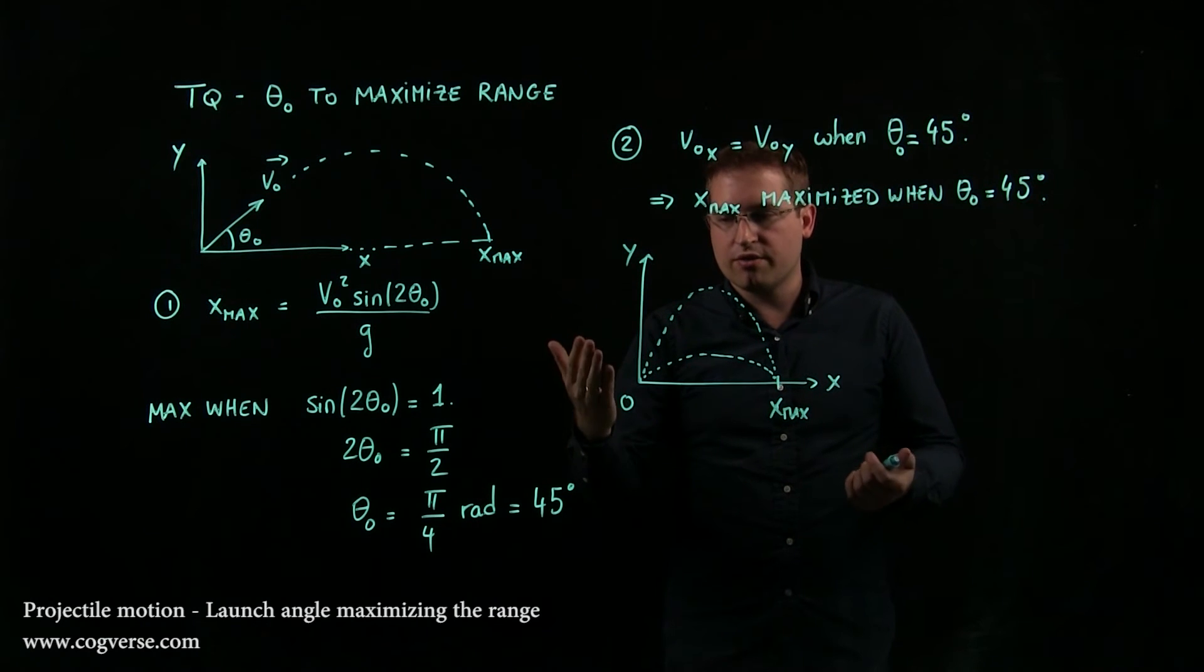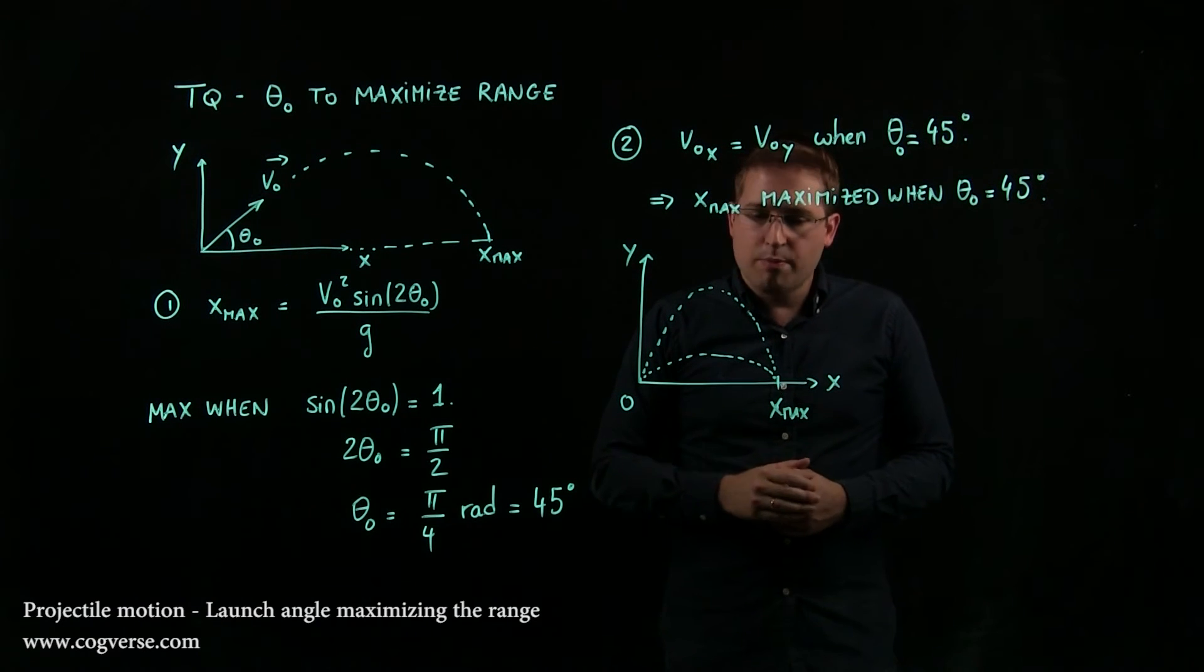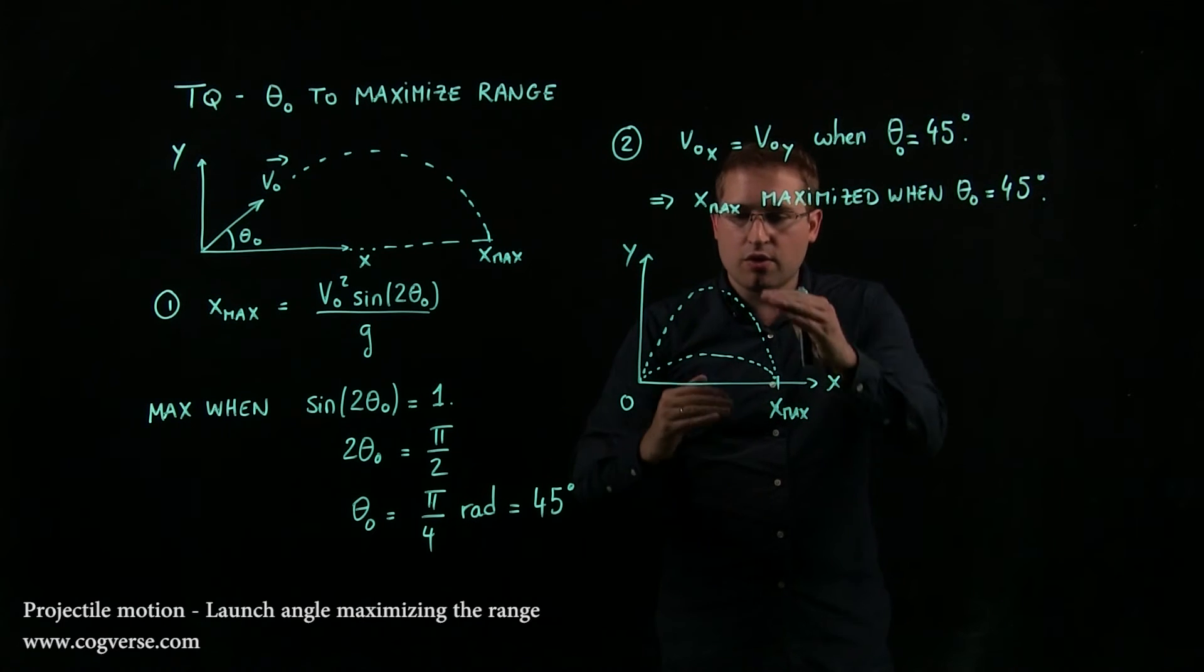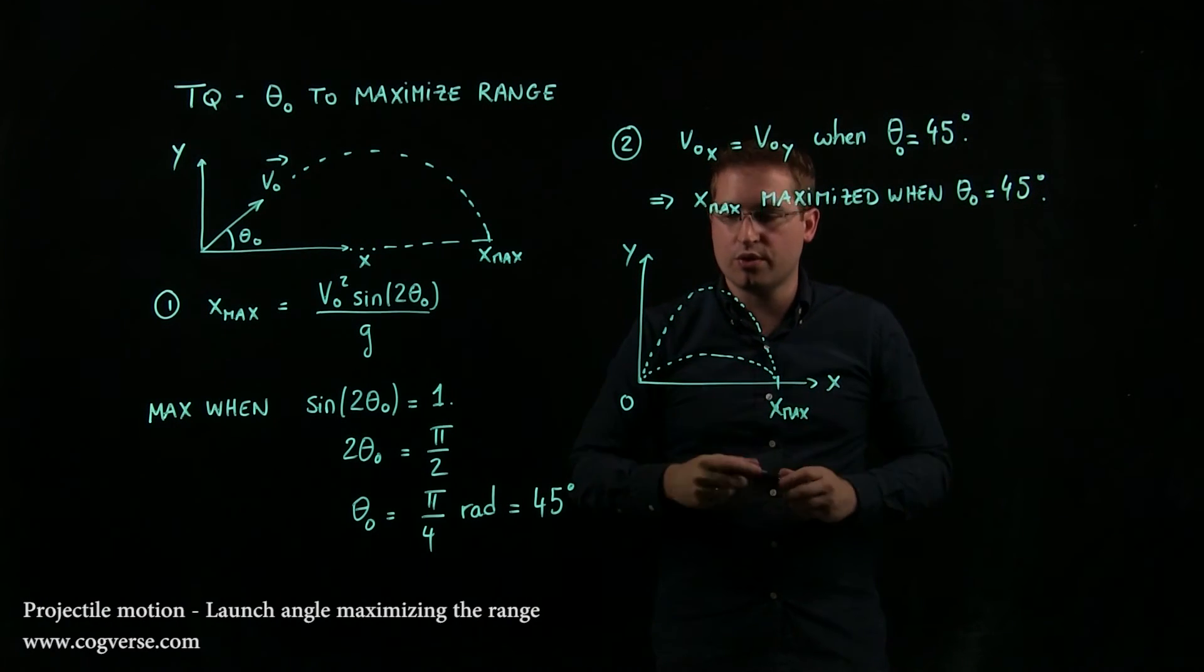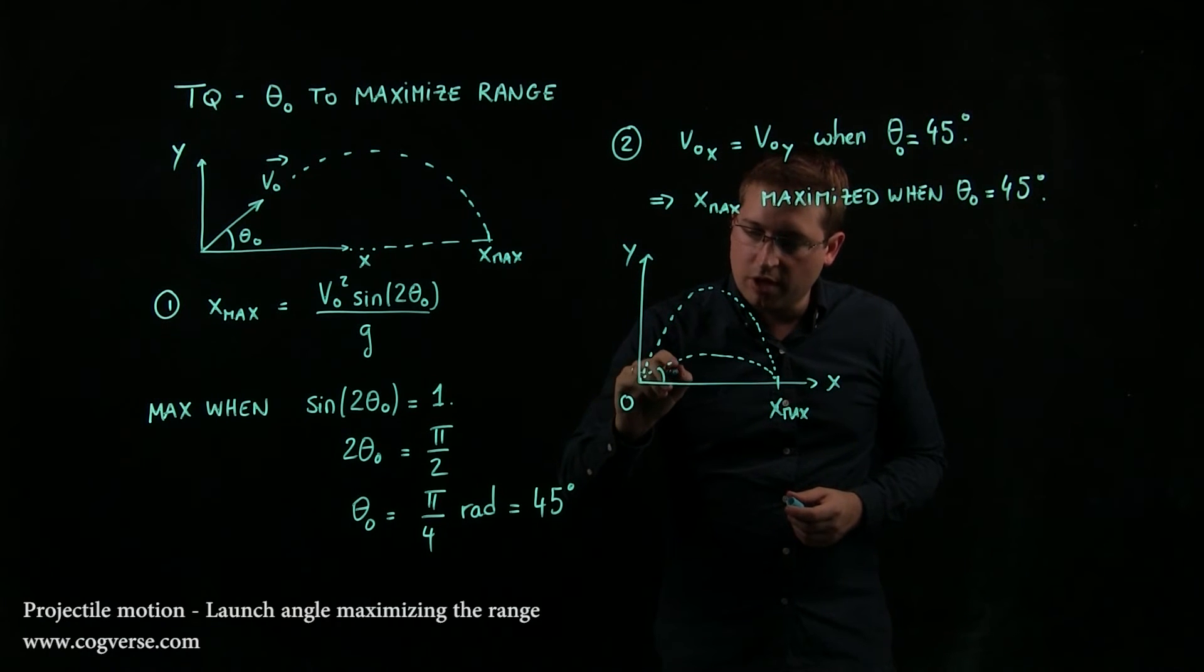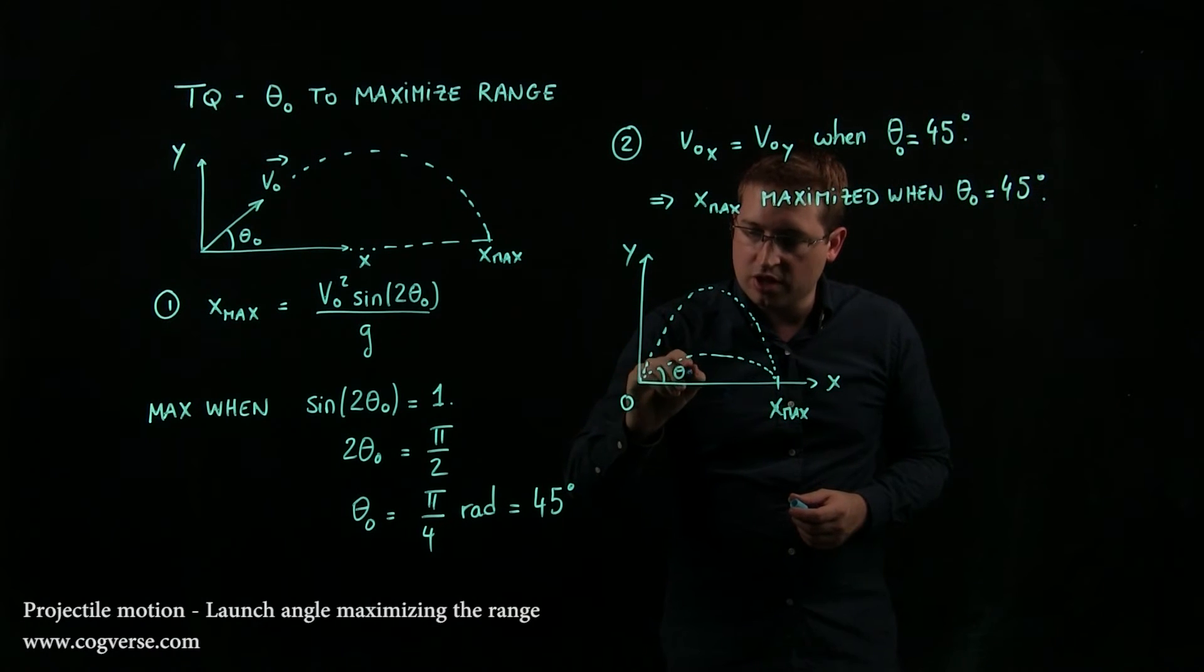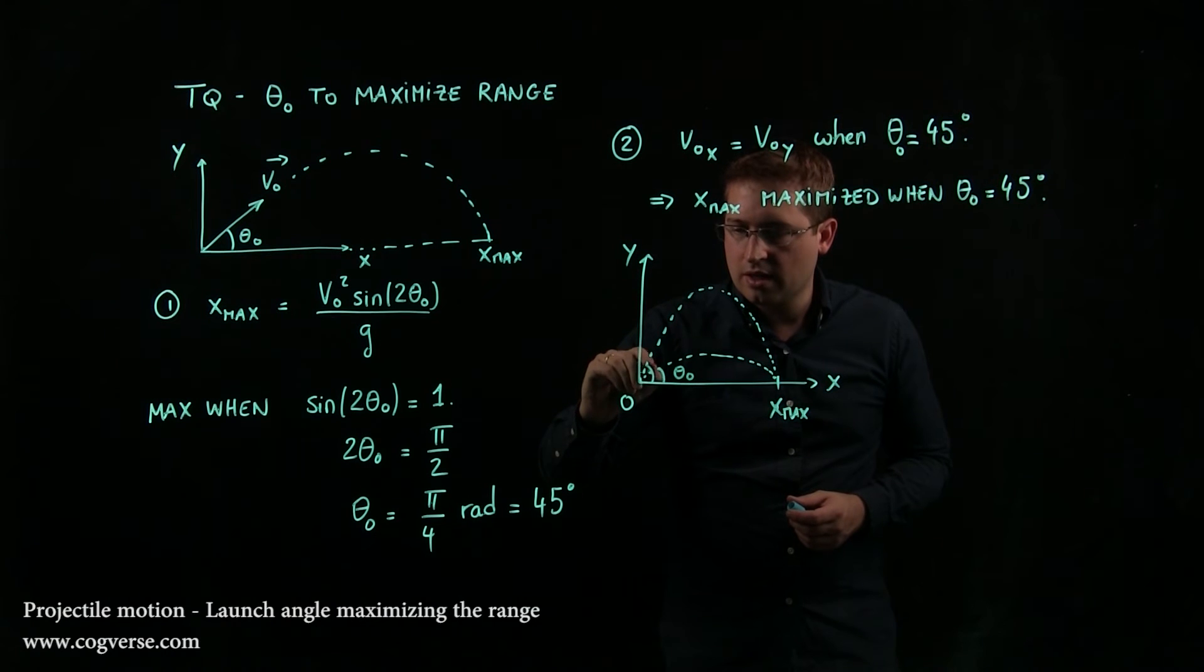And again, it's all about a trade-off with the initial velocity. But what happens is if you pull xₘₐₓ as far as it can go, these two curves eventually superpose, and they superpose when they have the same launch angle.